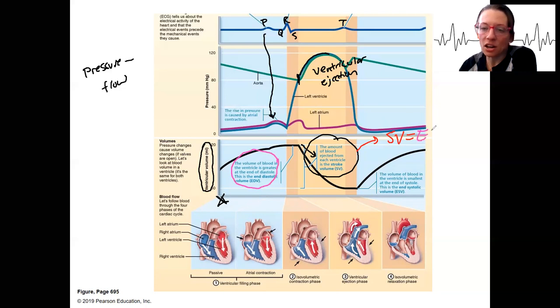The end diastolic volume is the amount of blood that is the maximum, is what we're starting with before that contraction. So after passive filling and then atrial contraction, the ventricle is full of blood, end diastolic volume.